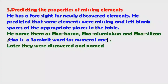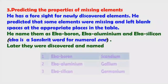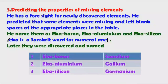Later these three elements were discovered. Eka boron was named Scandium, Eka aluminium was named Gallium, and Eka silicon was named Germanium. Remember these names — they are very important.